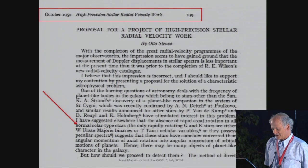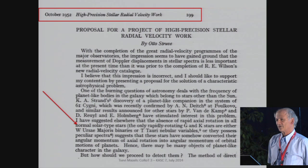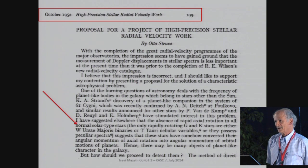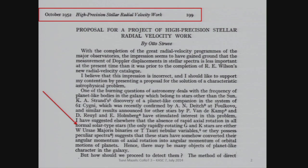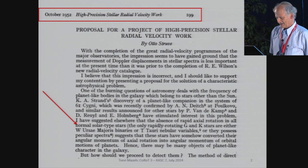What Struve says is that around that time it was realized that G stars don't rotate fast. This was done by observations measuring the V sine i, and they realized that G stars rotate slowly. So what Otto Struve says is: I have suggested elsewhere that the absence of rapid axial rotation in all normal solar-type stars suggests that these stars have somehow converted the angular momentum of axial rotation into angular momentum of orbital motion of planets. Hence, there may be many objects of planet-like character in our galaxy.